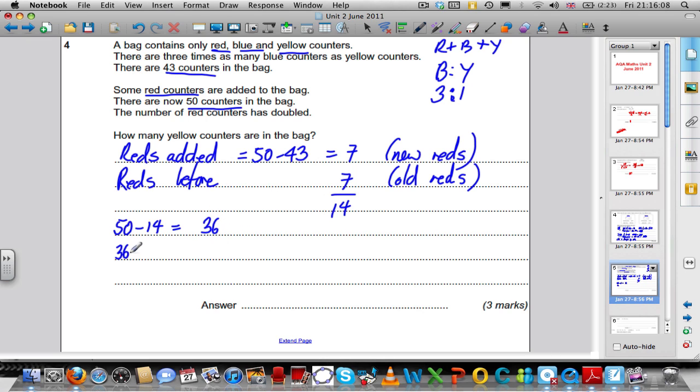So we have to divide 36 in the ratio 3 to 1. So we do 36 divided by 4 parts in total, so each part is worth 9. So therefore in the ratio 3 to 1, we would have 27 to 9. The question asks us how many yellow counters in the bag, so the yellow counters is 9.